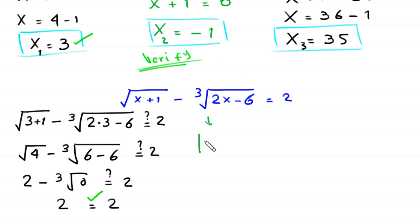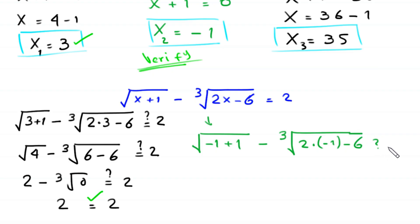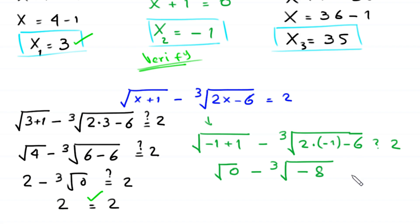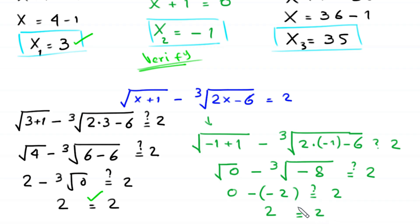When x is negative 1: root(negative 1 plus 1) minus cube root(2 times negative 1 minus 6) equals root 0 minus cube root(negative 2 minus 6), which is 0 minus cube root of negative 8. Cube root of negative 8 is negative 2, so 0 minus negative 2 equals positive 2, which equals 2. So x equals negative 1 is also a valid solution.